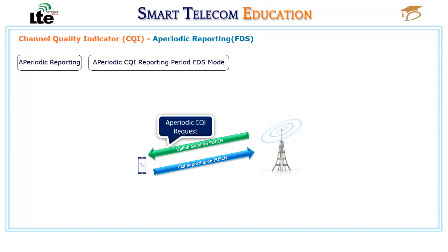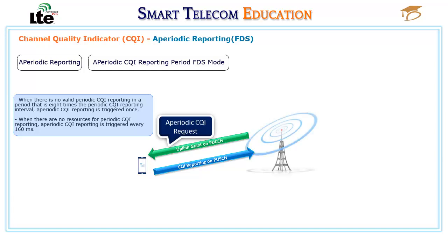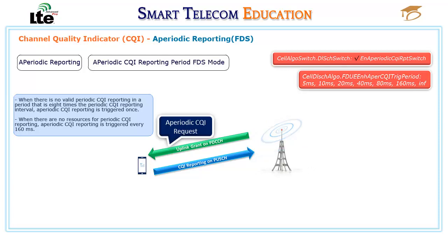Aperiodic CQI reporting is not triggered for UEs in Frequency Diversity Scheduling mode if there is valid periodic CQI reporting. Aperiodic CQI reporting is triggered when there is no valid periodic CQI reporting in a period that is eight times the periodic CQI reporting interval, or when there are no resources for periodic CQI reporting — in that case, it is triggered every 160 milliseconds. In FDD, aperiodic CQI reporting can be triggered at intervals for UEs in FDS mode, controlled by the Enhanced Aperiodic CQI reporting option of the Cell Algo Switch Downlink Scheduling Switch parameter, with the interval specified by the FDUE Enhanced Aperiodic CQI trigger period parameter.